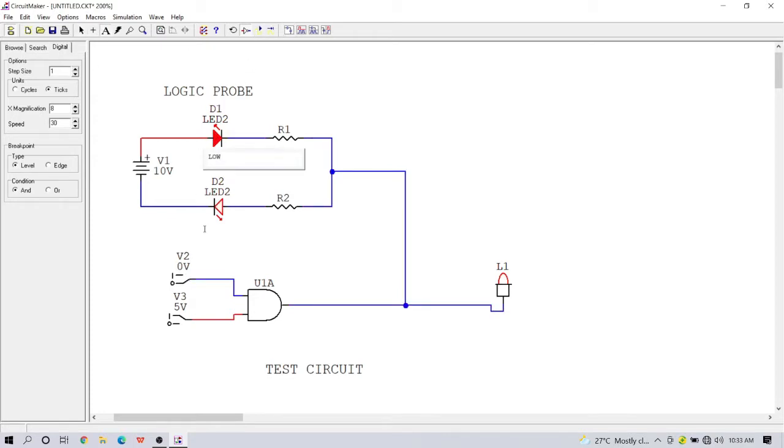As you can see, when the output is low, one of the LED will light up, indicating that the output in that particular part of the circuit is low.